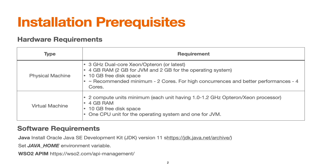For software requirements, we need two core components: Java and the API Manager binaries. With API Manager 4 you can use JDK 11. Links are provided for downloading the respective Java version archive from java.net. You also need to set the JAVA_HOME environment variable, because this variable is used during the bootstrapping of the WSO2 API Manager server.